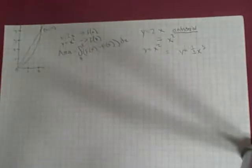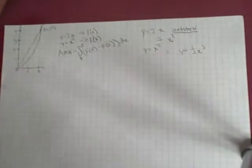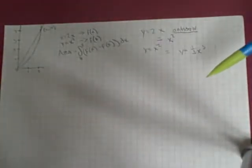Alright, today we will be doing the 2009 question 4 on the AP Calculus exam. This is a free response that deals with area and volume using two graphs and an intersection point. For this one we won't be doing rotating around the axis — we'll just be finding general area and volume using cross sections.